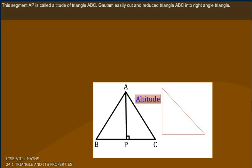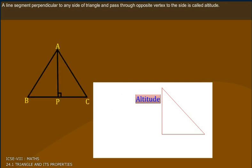Gautam easily cut and reduced triangle ABC into right-angle triangle. A line segment perpendicular to any side of triangle and pass through opposite vertex to the side is called altitude.